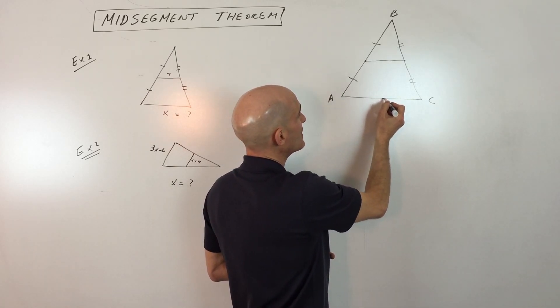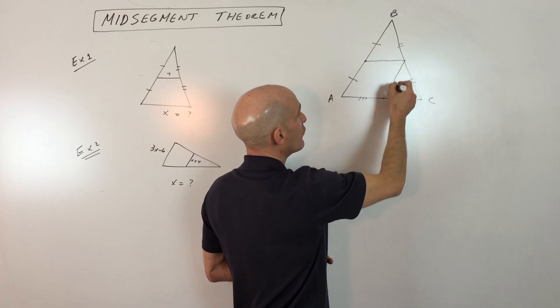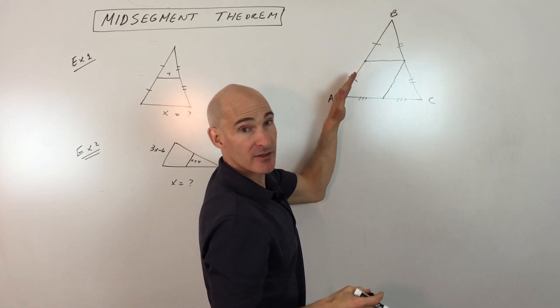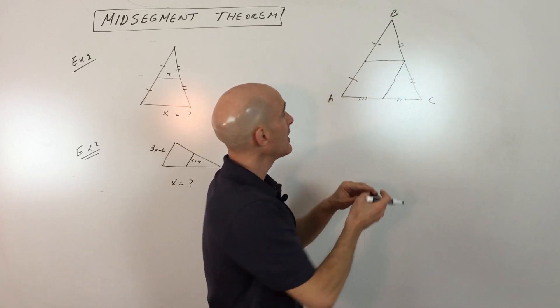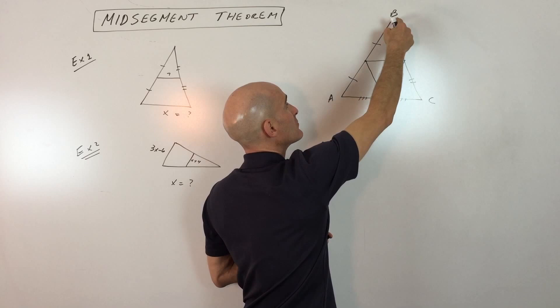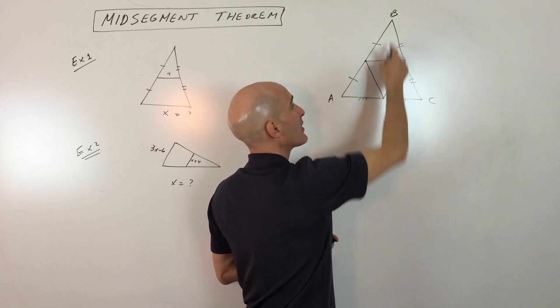Now, if you find the midpoint of this side right here such that these are the same, and you connect these two midpoints, this would be a midsegment, and it's going to be parallel to this base and half as long. Same thing here. If you connect these two midpoints, this is a midsegment. It's going to be half of this base and parallel.